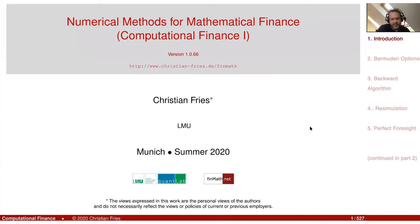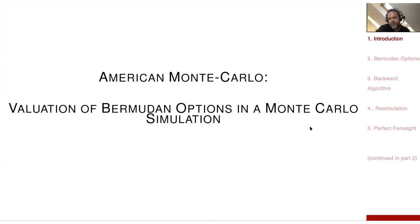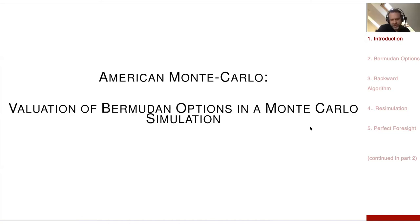The motivation for Mathematical Finance is the valuation of Bermudan options — valuation of Bermudan or almost American options in Monte Carlo simulation. An American option is one where exercise is allowed at any time before maturity, in contrast to a European option.